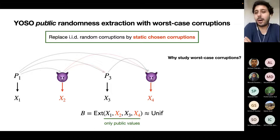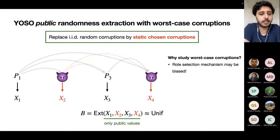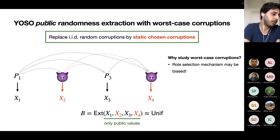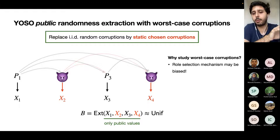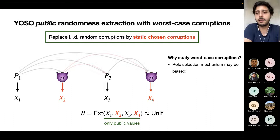Why are we studying worst-case corruptions? Previously we assumed the role selection mechanism was perfectly random, but this may not be the case. The role selection mechanism could be biased towards the adversary — for instance, if it's implemented by a proof-of-work blockchain, the adversary could commit to spending more resources at certain points to have higher probability of controlling a certain party. This would break previous protocols. So studying worst-case corruptions is a clean way of addressing these biases.